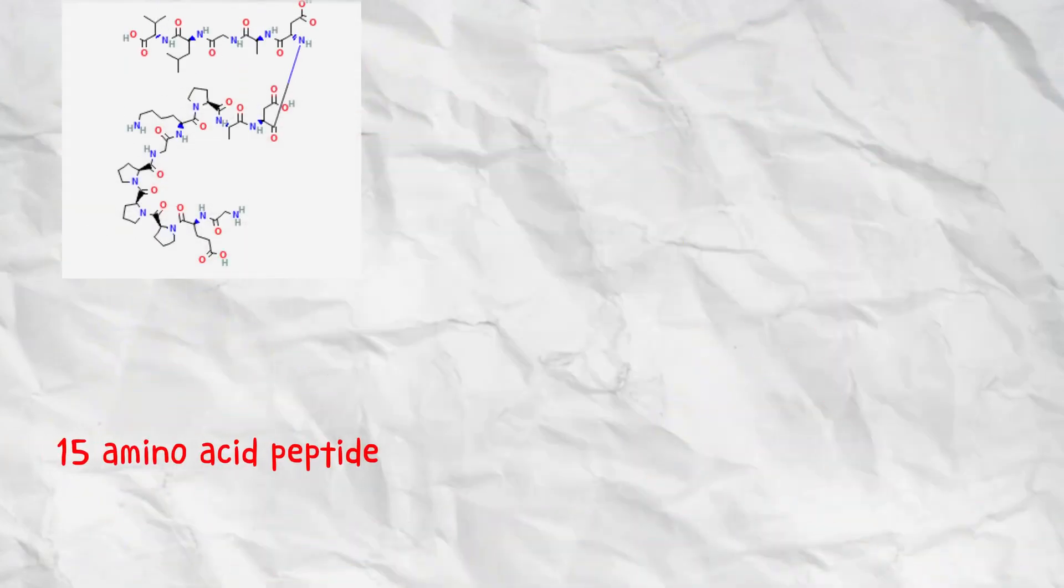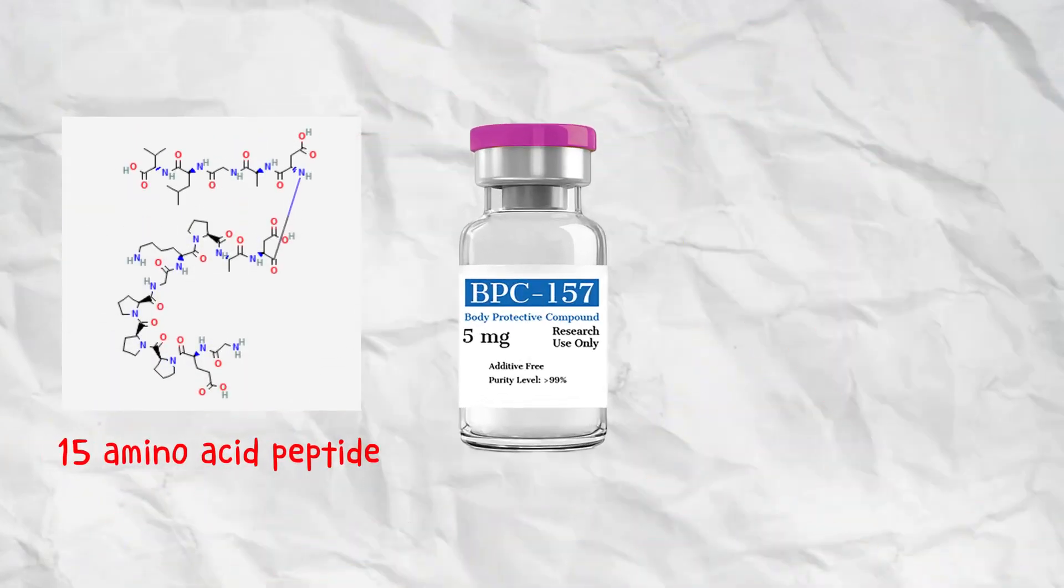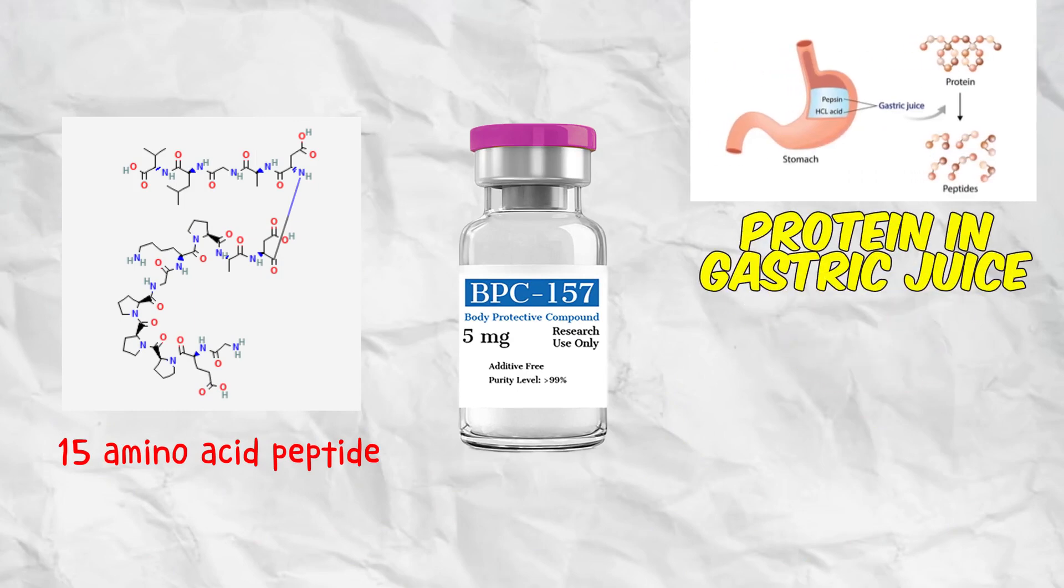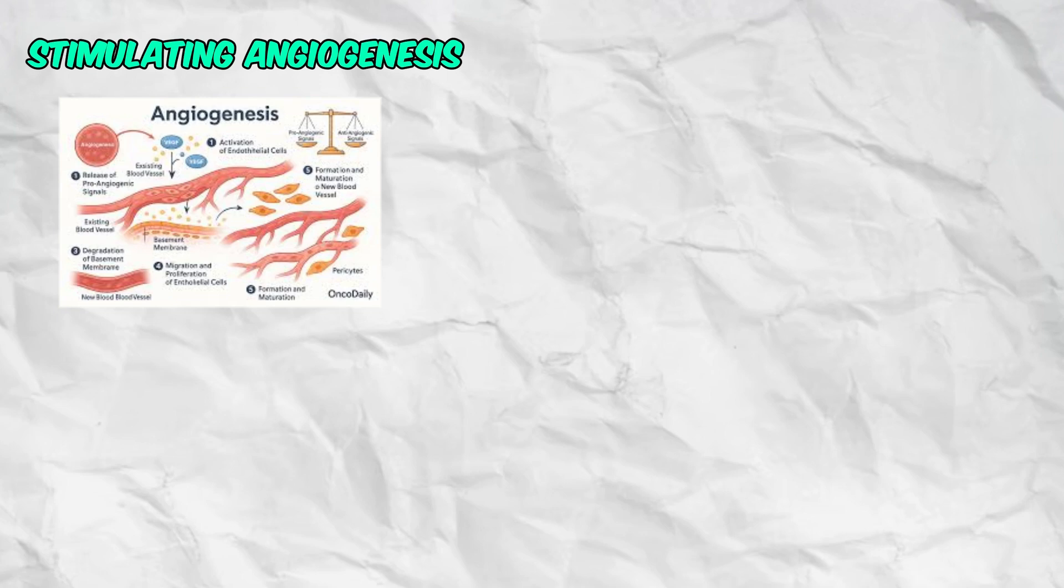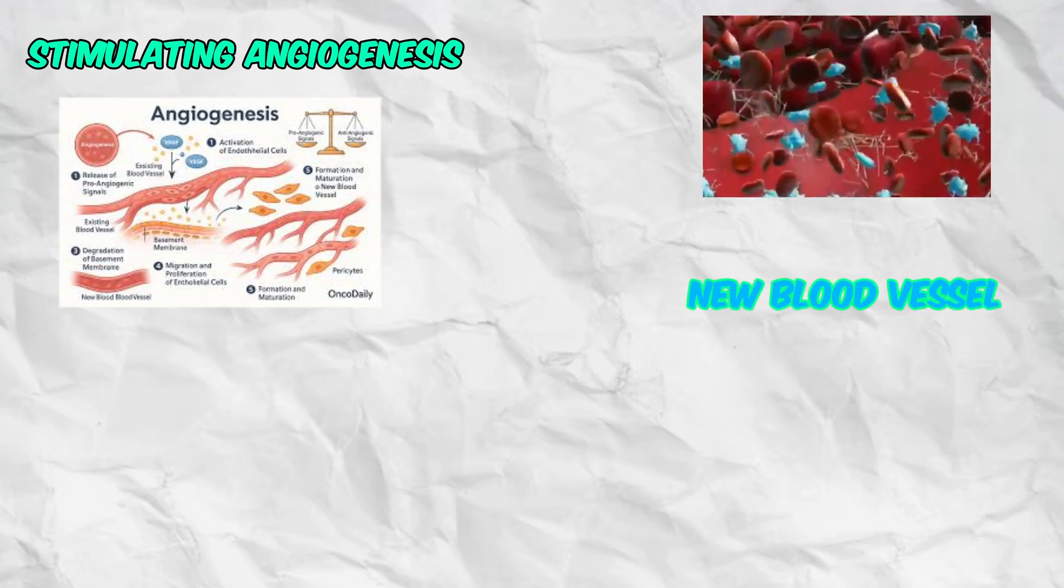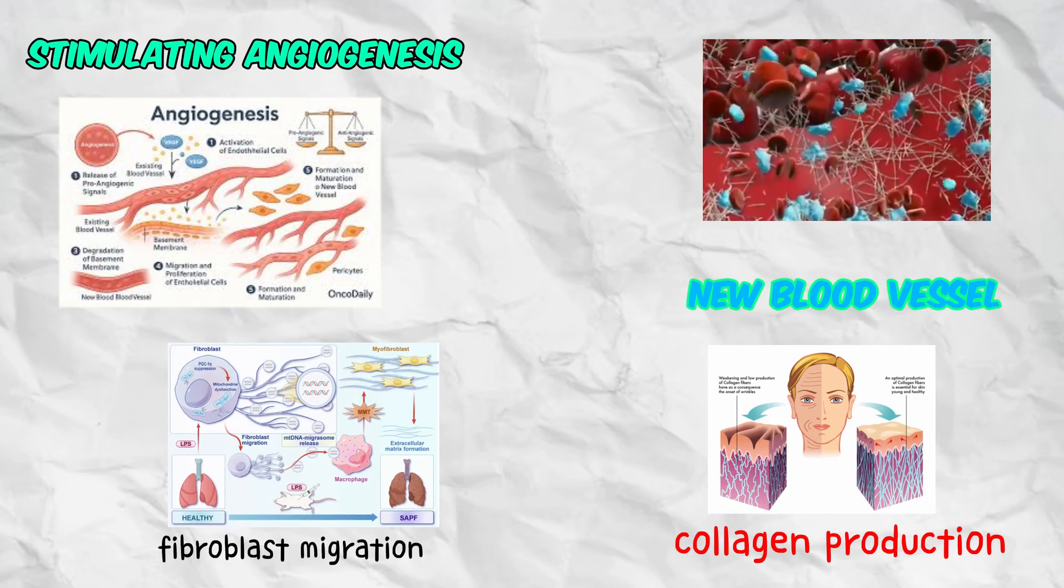BPC-157 is a 15-amino acid peptide derived from a natural protein in gastric juice known as body protection compound. It promotes healing by stimulating angiogenesis, new blood vessel formation, collagen production, and fibroblast migration.